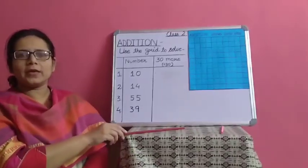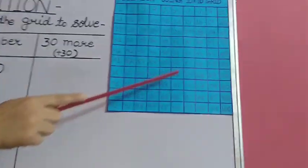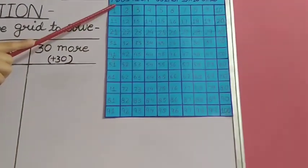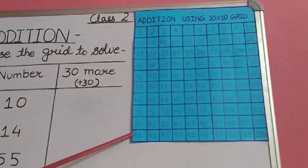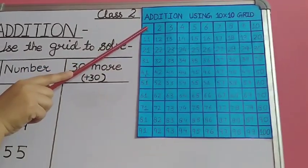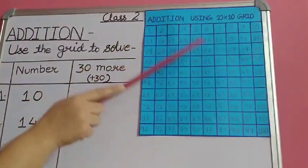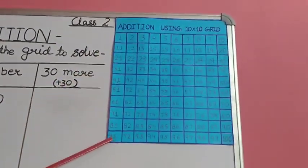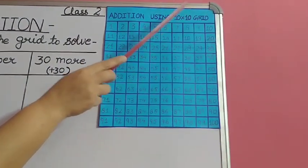Now how to make a grid? You can make a grid by using a sheet of paper. You can divide the sheet into 10 columns and 10 rows, and then write numbers from 1 to 100. This grid has 10 columns and 10 rows, which is why it is called a 10 by 10 grid.